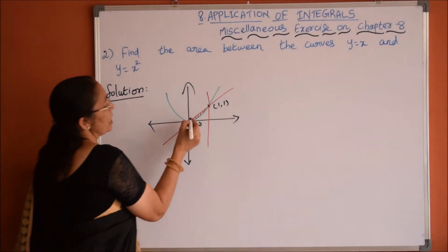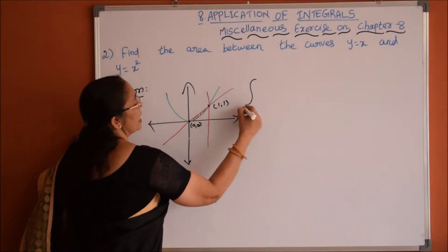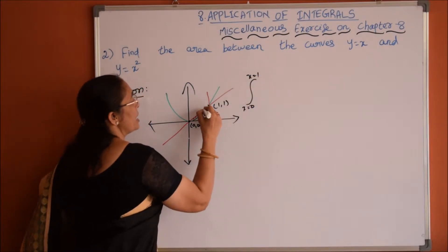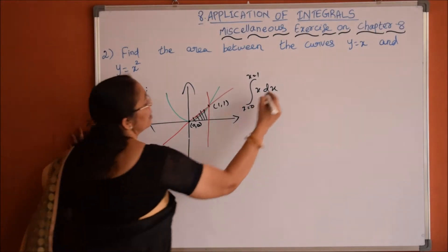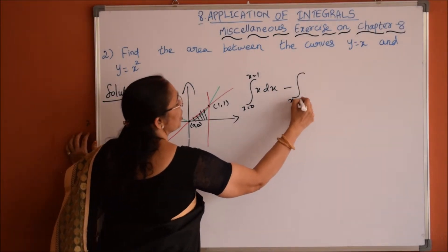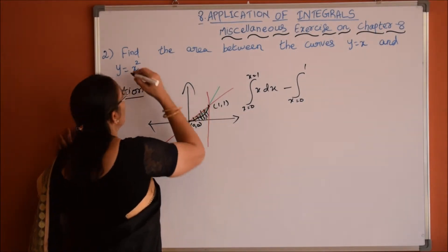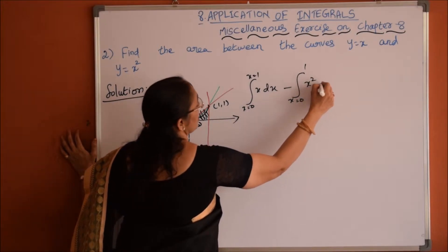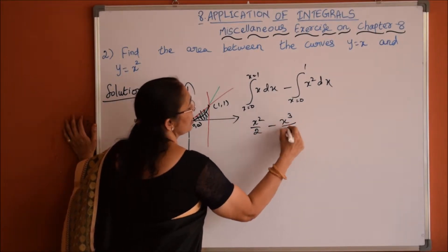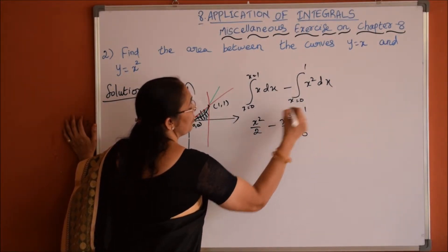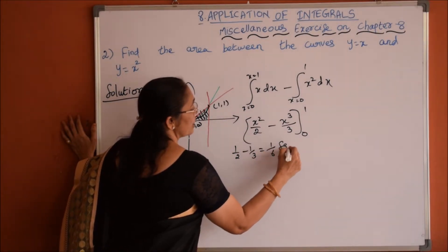We need the area between these two curves. The required area is integration from x=0 to x=1 of the area covered by the straight line minus integration from x=0 to x=1 of the area covered by the parabola y=x square dx. So integration of x dx minus integration of x square dx gives x square by 2 minus x cube by 3 with limits from 0 to 1, which is half minus 1 by 3, equal to 1 by 6 square units.